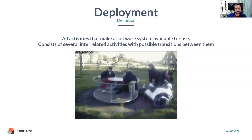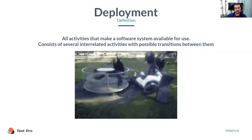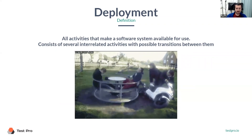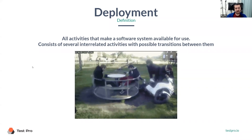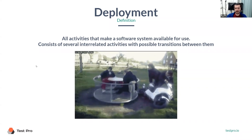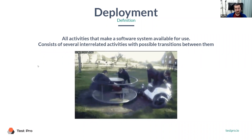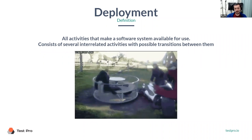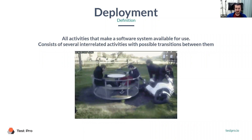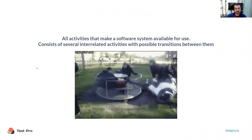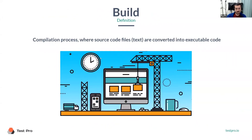Deployment is all the activities to make software available for use. It involves a few different activities with transitions between them. For example, developers first need to spin up a virtual machine, install some software, and then deploy that build from the previous slide, and then run it remotely on the remote server.